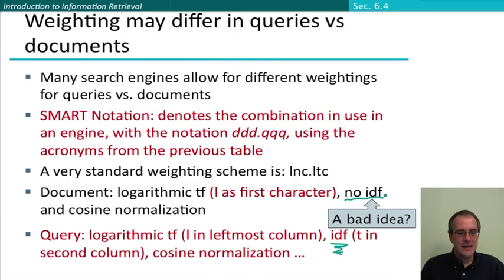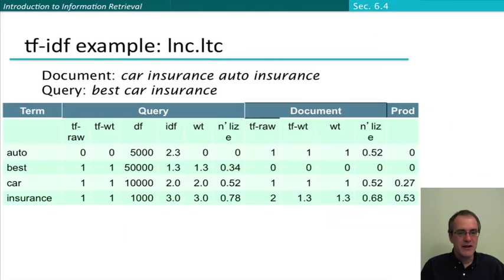Let's take this weighting scheme and again go through a concrete example. So we're just going to be working out the score for precisely one document against one query using this weighting scheme, but we'll do it in great depth. Okay, so our document is car insurance, auto insurance. It's a bit of a fake document, but we wanted something short. And then the query is best car insurance.